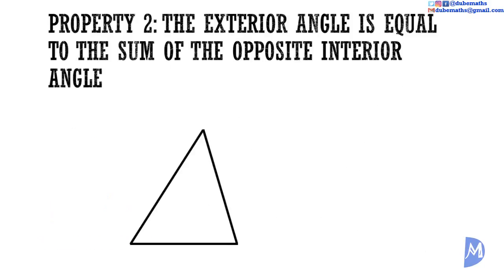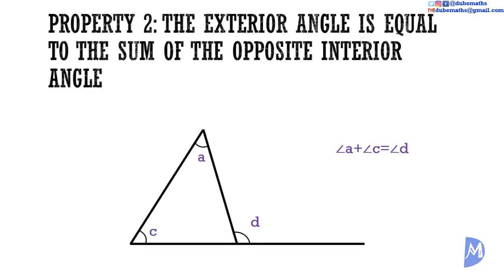Property 2: The exterior angle is equal to the sum of the opposite interior angles. What is an exterior angle? If any side of a triangle is extended, two additional angles are seen — a straight angle and another. The other angle, angle D, is referred to as the exterior angle. The rule says that angle D is equal to angle A added to angle C.